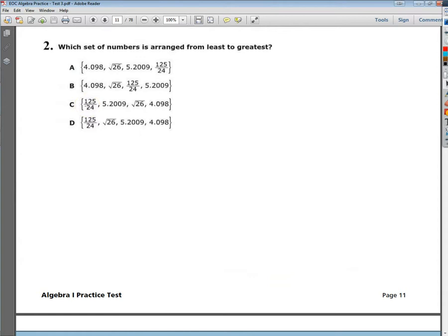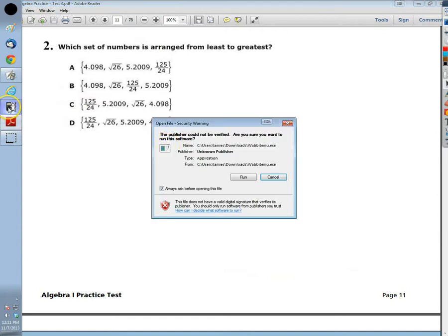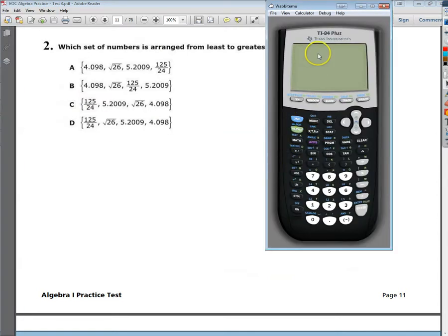Now, the easiest thing to do is change them all into the same form. I tend to prefer decimal forms, so I'm going to bring up an emulator here very quickly. Don't worry, TI, I own it. So, I'm going to convert everything into a nice decimal form so I can make some comparisons.